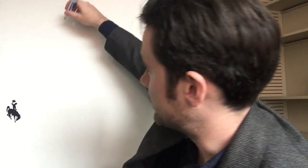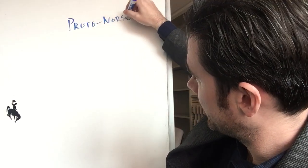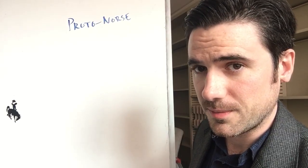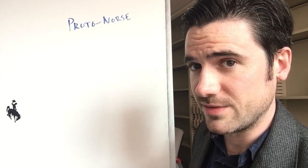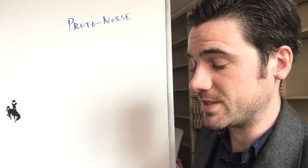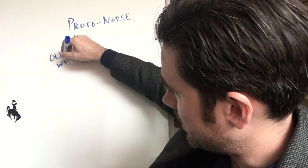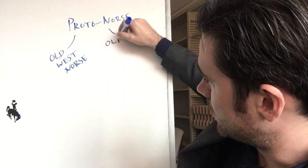I'll turn to my trusty chalkboard here. We often talk about Proto-Norse or Proto-Scandinavian being the language spoken in Scandinavia before basically the Viking Age, 870 or 800. During the Viking Age — when we often call the language Viking Norse, Archaic Norse, sometimes the term Common Scandinavian is used — the Scandinavian language begins to split into a distinct western branch and an eastern branch. By convention, these are called Old West Norse and Old East Norse.